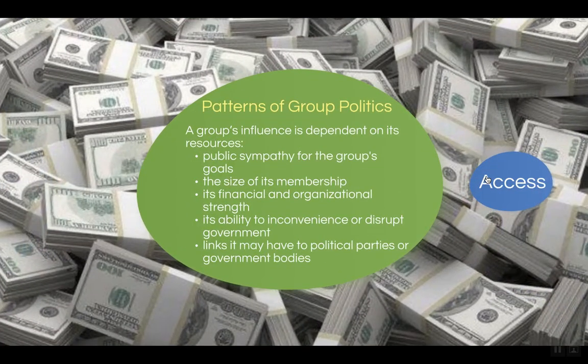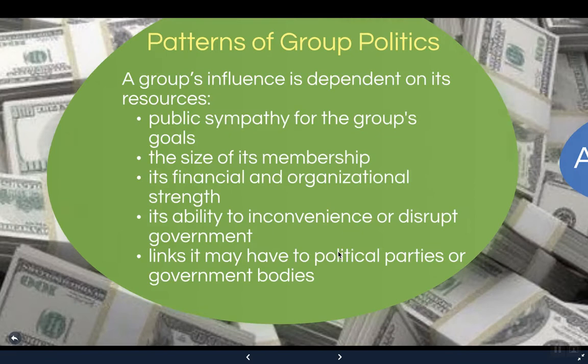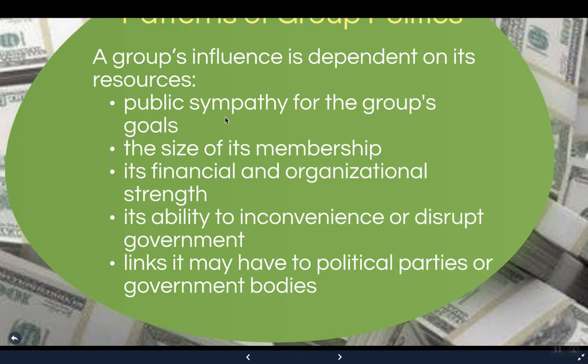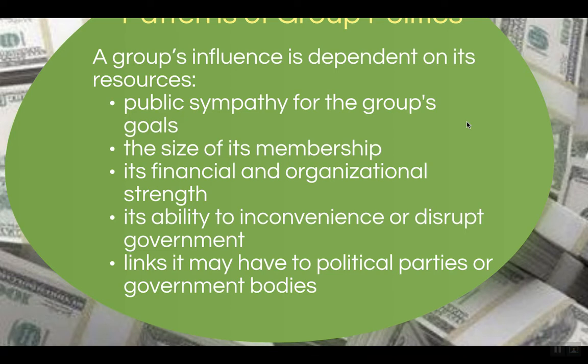When groups have a goal, we can see some patterns. Political scientists have argued that a group's influence is dependent on its resources. Groups rely on public sympathy for their goals — you need to have favorable opinions amongst the general public. Otherwise, members of the legislature or executive branch are not going to have any sympathy for you. If the public doesn't like you, the government is not going to act.